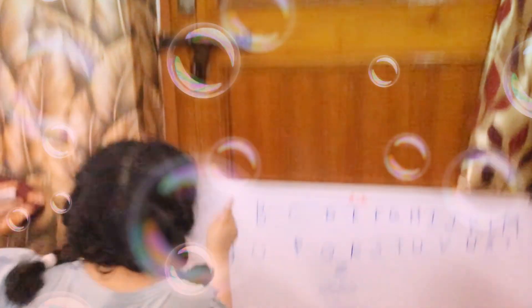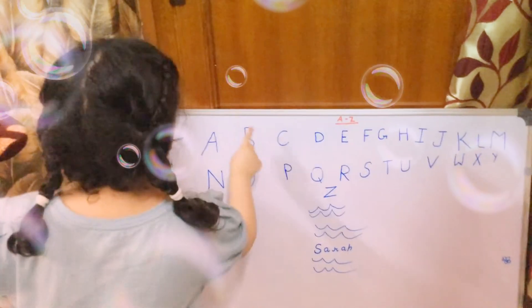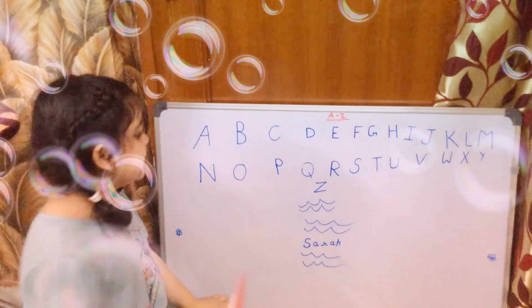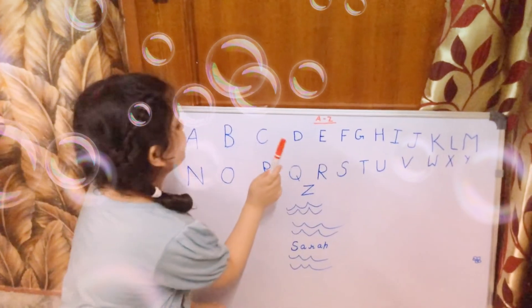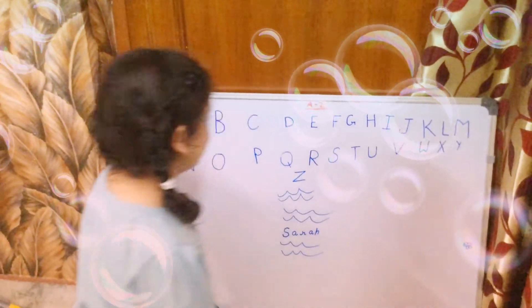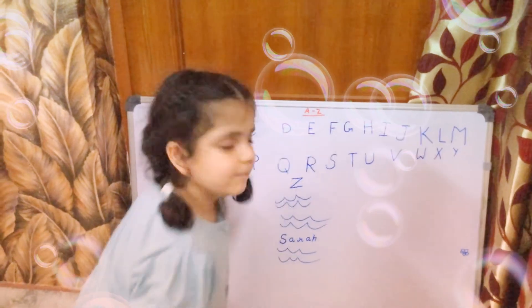Let's start. A for apple, B for ball, C for cat, D for dog, E for elephant, F for fish, G for crabs.